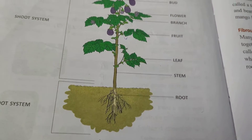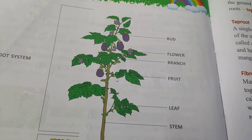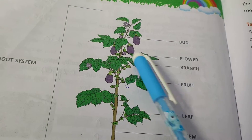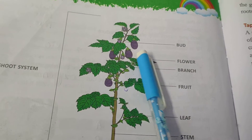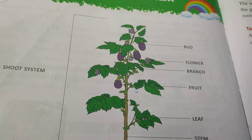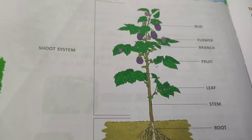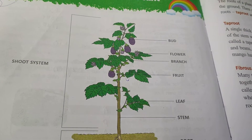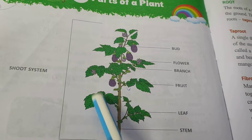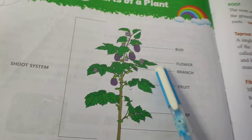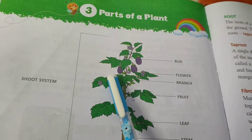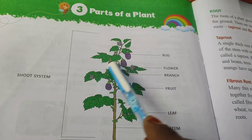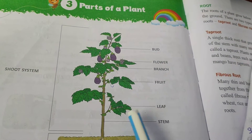Root means jad. I hope you understand this — this is the parts of a plant picture. So students, in this lesson we are learning about parts of a plant.